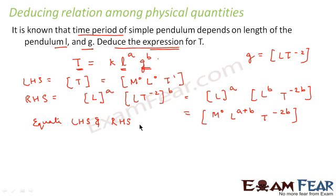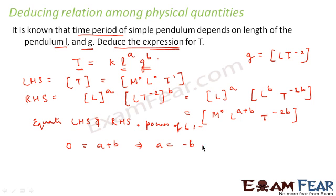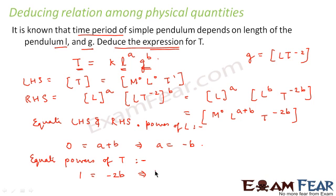Equating LHS and RHS: the power of L on the LHS is 0 and on the RHS is a+b, so we get a = −b. Equating powers of T: on the LHS it is 1 and on the RHS it is −2b, so b = −1/2. Substituting back gives a = 1/2.